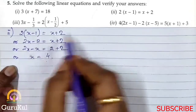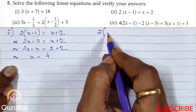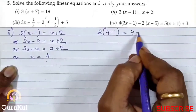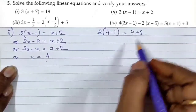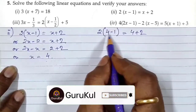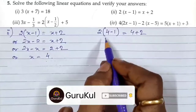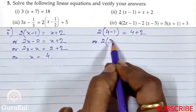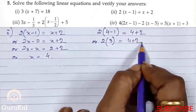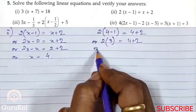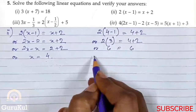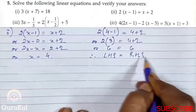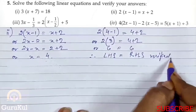So x's value has been found. Now let us verify. Substituting x = 4: 2 bracket 4 minus 1 bracket close is equal to 4 plus 2. Straight away, 2 into 3 is equal to 6. Opening the bracket: 6 is equal to 6. Therefore left-hand side is equal to right-hand side, which is verified.